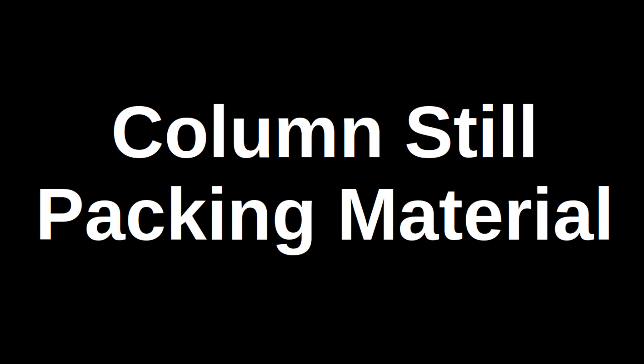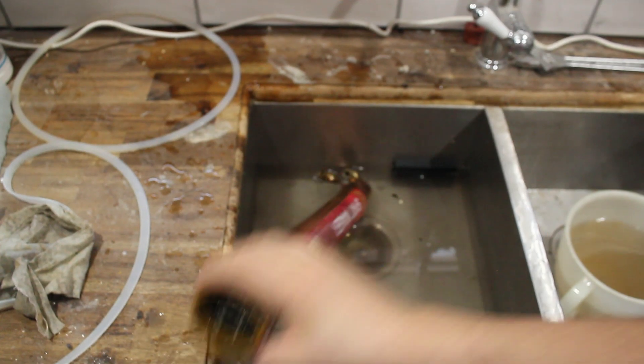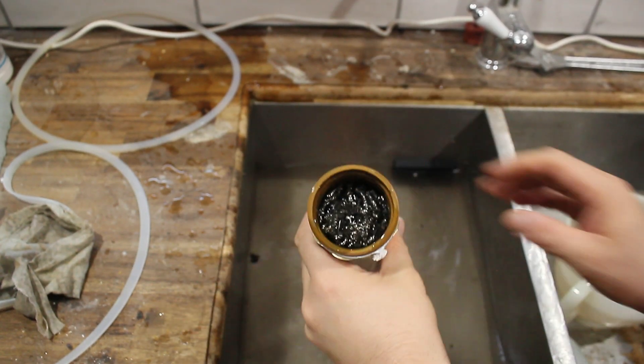Hello and welcome to this video on different materials used to pack a column still. A column still is used to separate your alcohol from the water and other wash content.